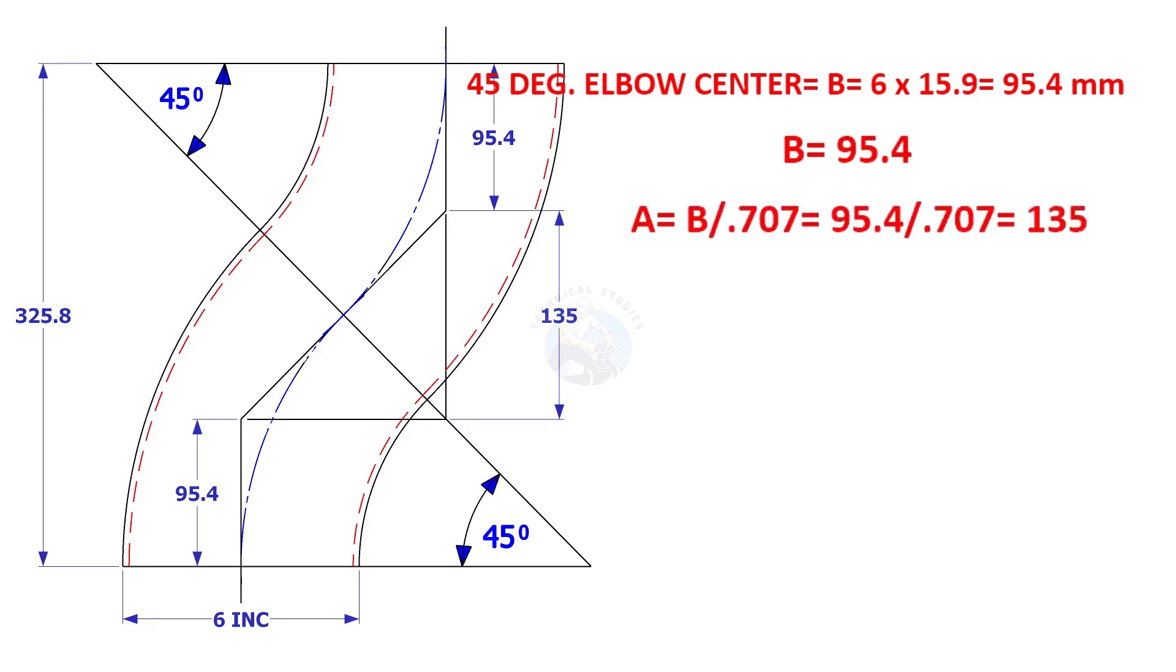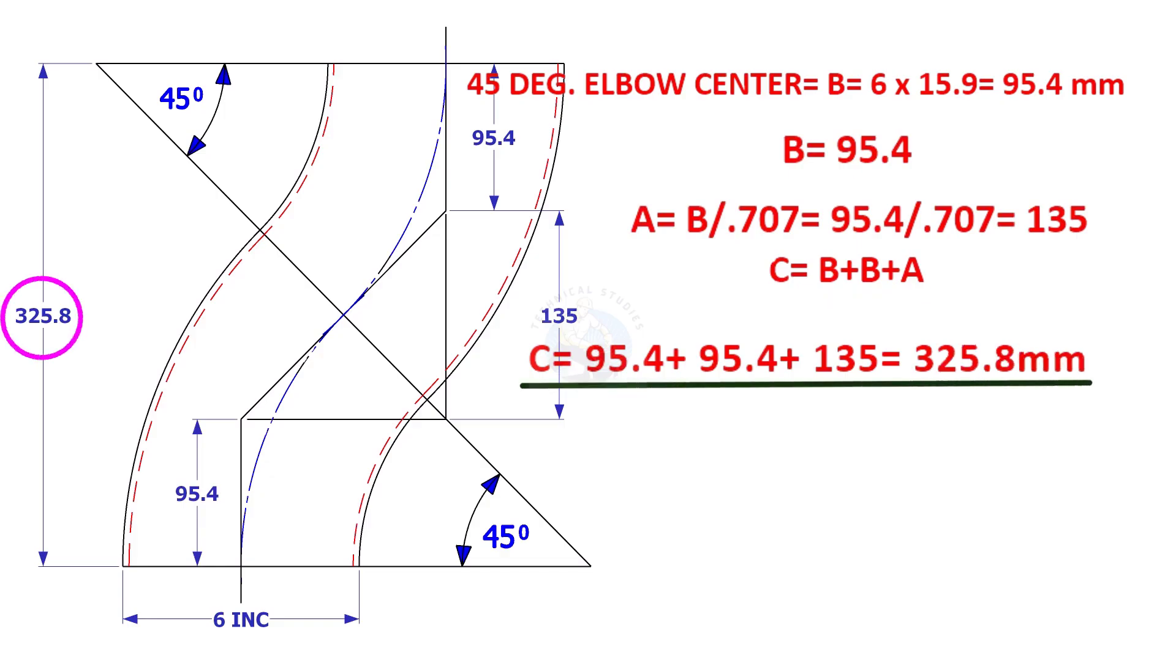A is B divided by point seven zero seven, which is one hundred and thirty-five millimeters. C is equal to two B plus A, which is equal to three hundred and twenty-five point eight millimeters.